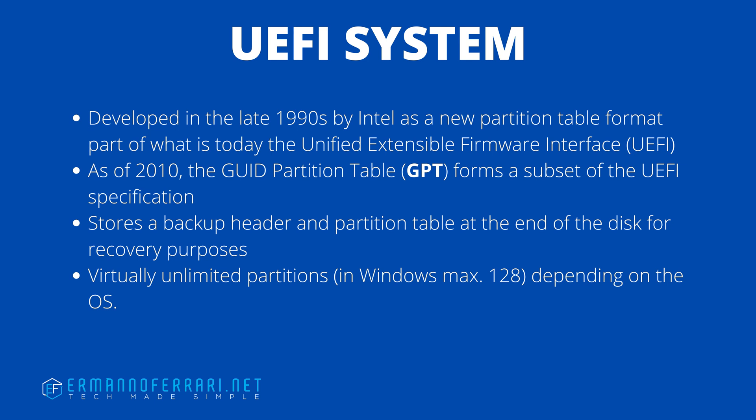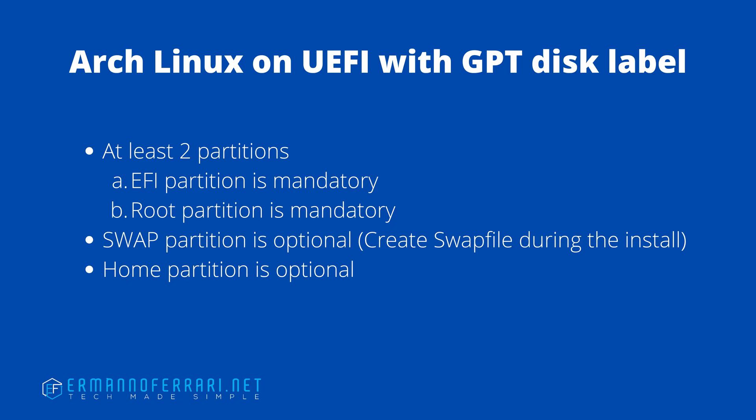When we want to install Arch Linux on a UEFI system, we need to use the GPT disk label. This is recommended because some UEFI implementations do not support booting to MBR while in UEFI mode. On a UEFI system with a GPT disk label, two partitions are mandatory: an EFI partition and a root partition. A swap partition is optional — you can always create a swap file during installation — and a home partition is also optional.